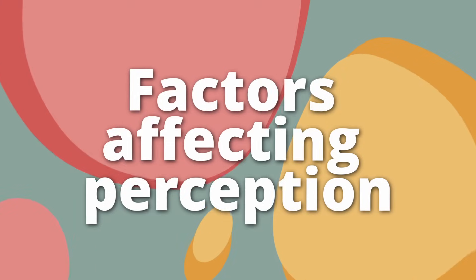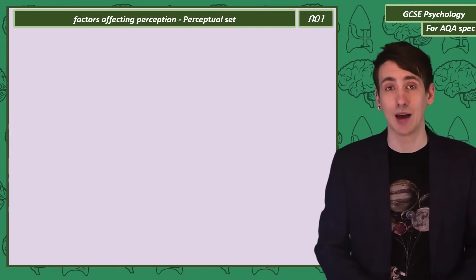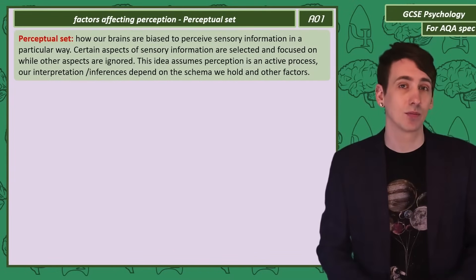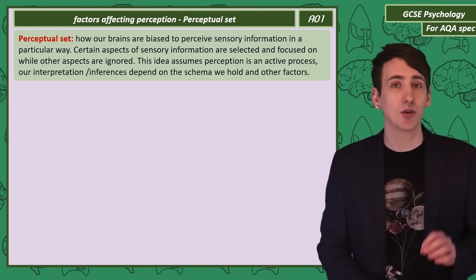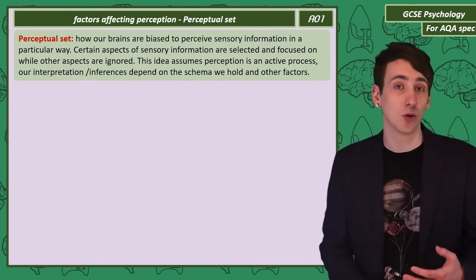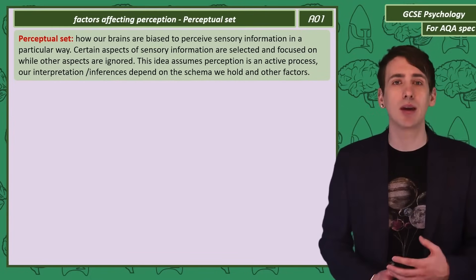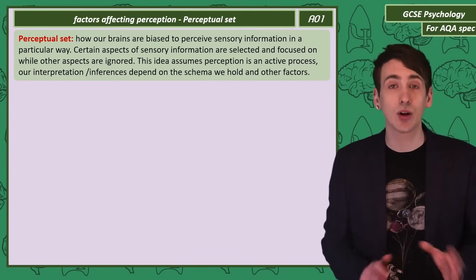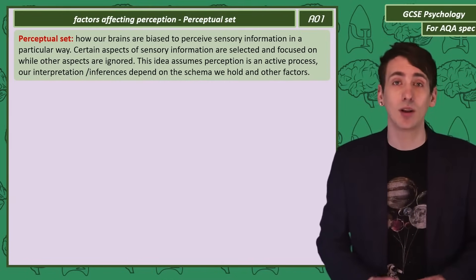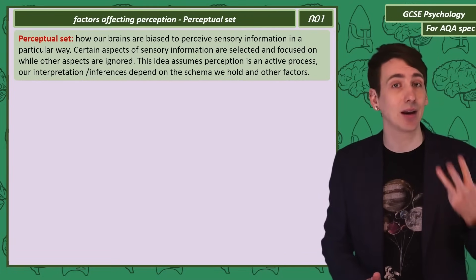Factors affecting perception. Let's start by explaining the term perceptual set. Our brains are thought to be biased in the way they perceive information. As sensory information is detected, we focus on some bits and ignore other parts. We have a set of expectations based on previous experience that we use to make inferences, altering our perception. The factors that can influence our perceptual set are culture, motivation, emotion, and expectation.